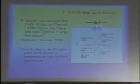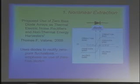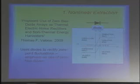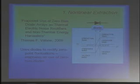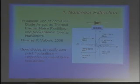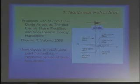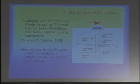The first class has been described in a number of places, most completely recently by Thomas Vallone, who wrote a paper called 'Proposed Use of Zero Bias Diode Arrays as Thermal Electric Noise Rectifiers and Non-Thermal Energy Harvesters.' The basic idea makes use of a diode, where electrons can move more easily downhill than uphill. That means that if we have random fluctuations, they are rectified — we get more current in one direction than the other — and we ultimately end up with DC power.